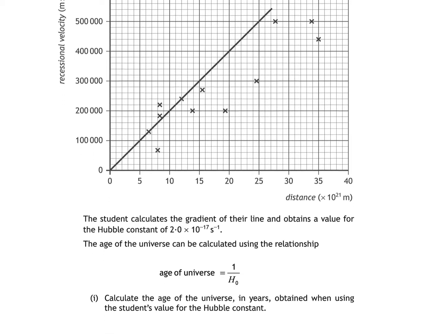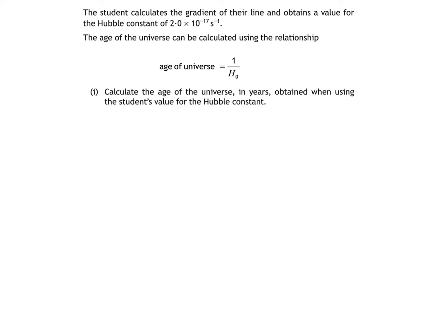So, let's get more space and plug that value of H0 into the equation. That means that the age of the universe is 1 divided by 2.0 times 10 to the minus 17, which gives us 5.0 times 10 to the power of 16 seconds.